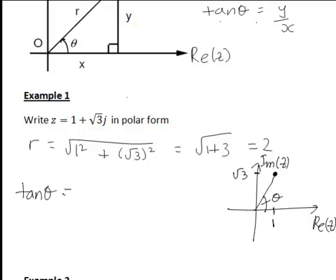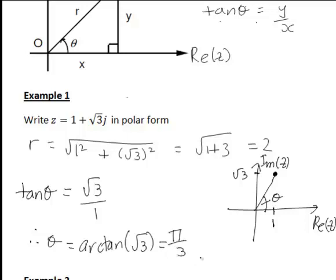So in this case tan θ is going to be the square root of 3 divided by 1, and in this case because we're in the first quadrant, θ in fact will just be inverse tan or arc tan of this, so arc tan of the square root of 3, which works out in this case to give us π on 3 radians, or 60 degrees. So therefore in this case 1 plus the square root of 3j, converting that into polar form, that would be of the form 2 cis π on 3, or equivalently 2 cis 60 degrees.